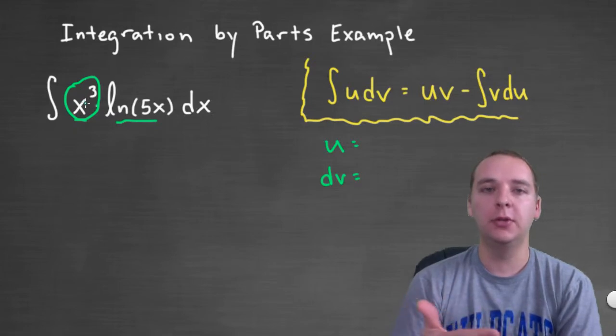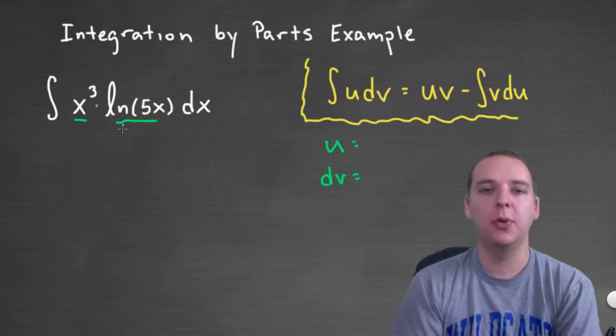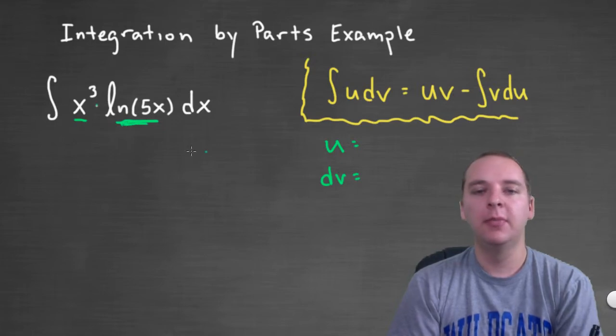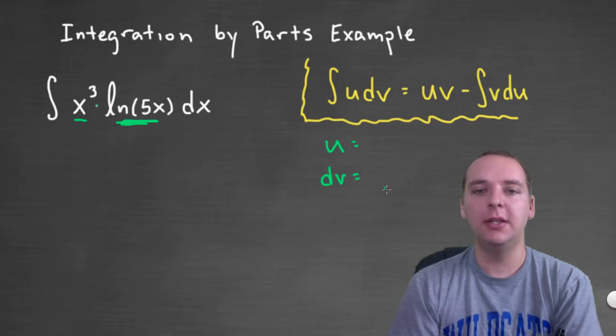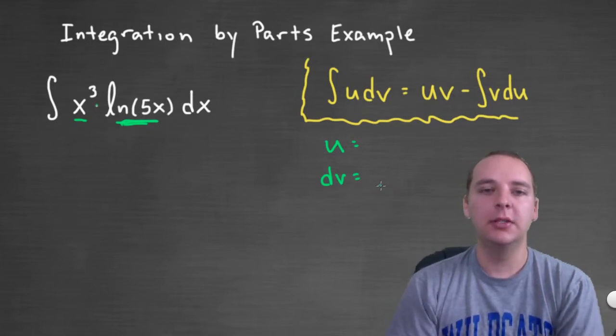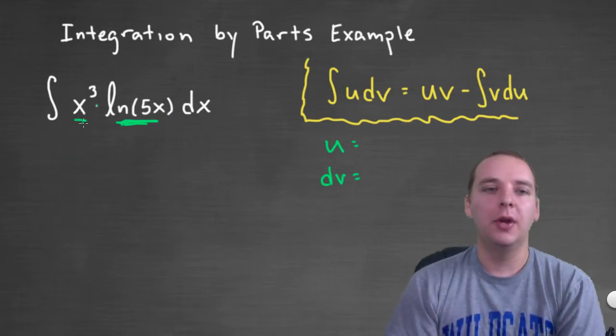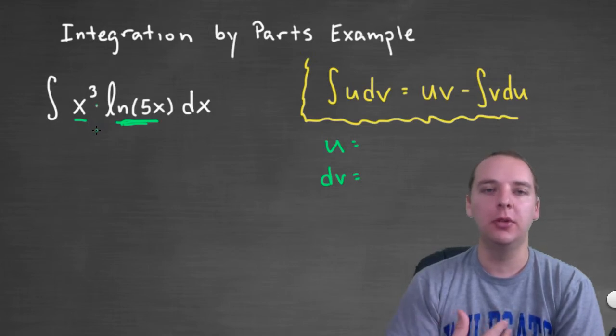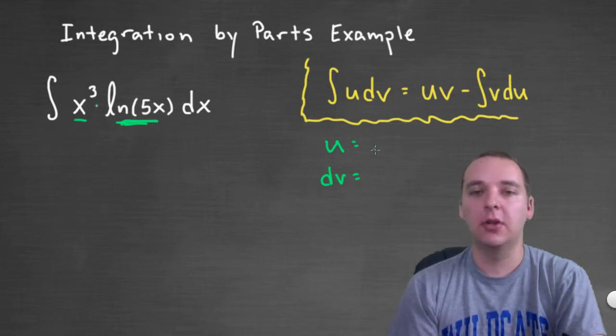x cubed would turn into 3x squared if we found du. That sounds like a great choice for u. However, that's not going to be the case in this example. Here's why. If we look at dv, natural log of x absolutely could not be dv in this example because natural log of x is not something easily integrable. Granted I don't want to integrate x cubed, but I can, it's not terrible to do. So really what forces my hand in this particular example is the natural log of 5x.